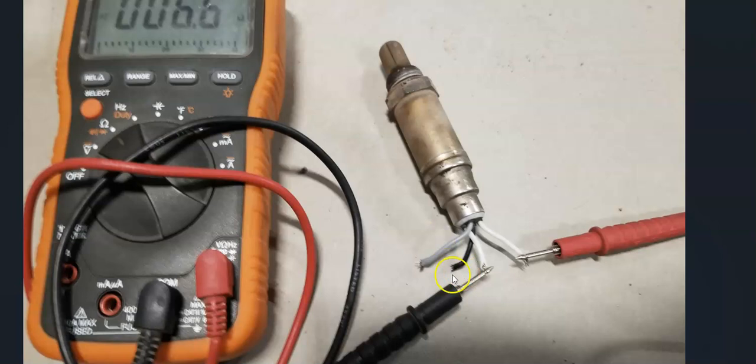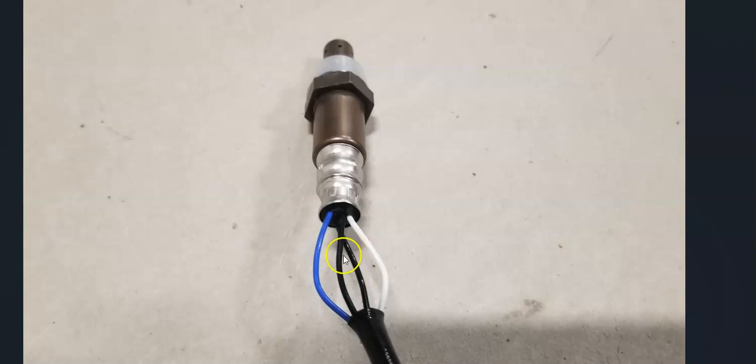So this gray and black wire, that's going to be going to the oxygen sensor. And these two white wires are going to the heater side. Here's another example. These two black wires would be going to the heater side. And then this blue and white wire would be going to the oxygen sensor side.